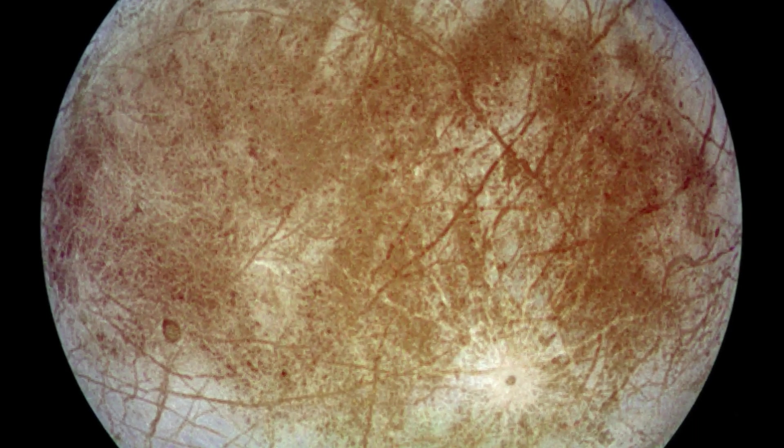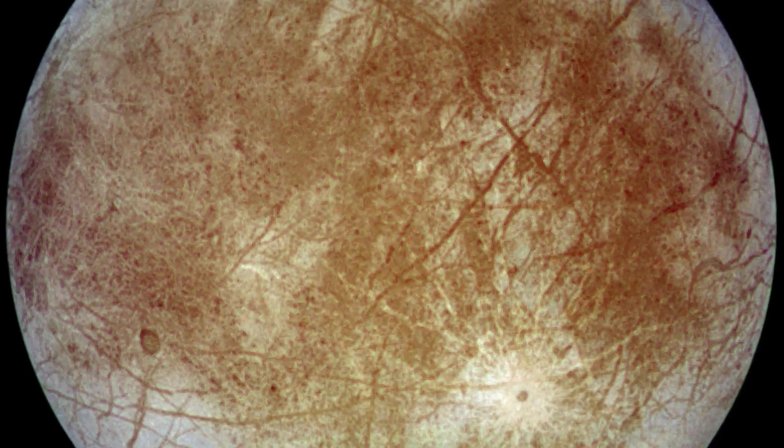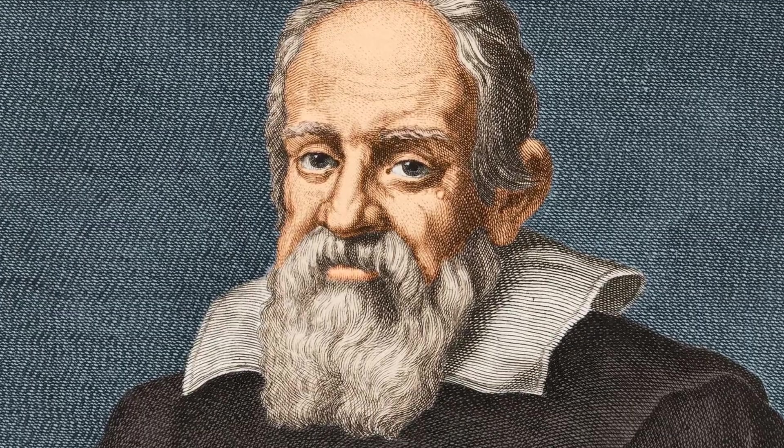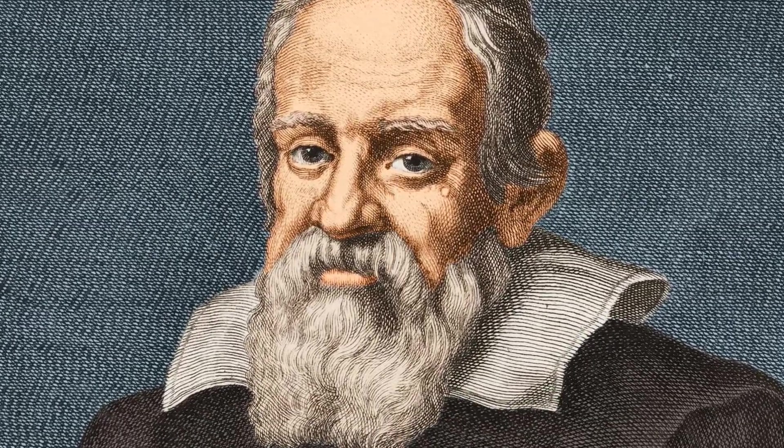There are over 200 moons in our solar system, yet there is one that has stood out ever since it was discovered in 1610 by Galileo. Europa.